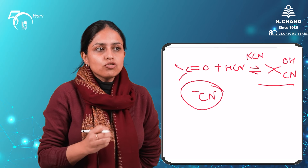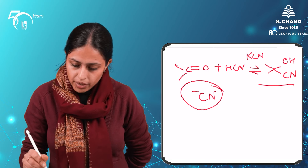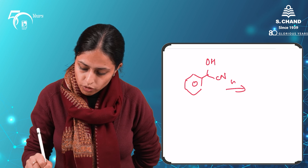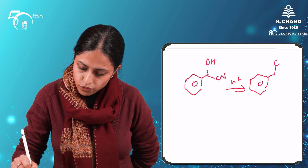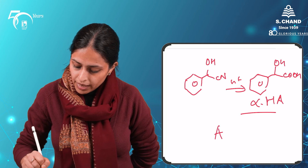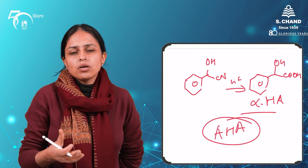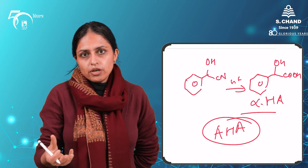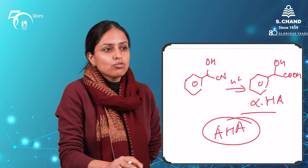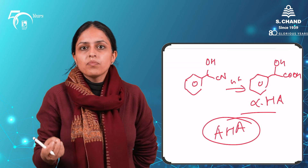Cyanohydrins are commercially important compounds. For example, the cyanohydrin of benzaldehyde, when hydrolyzed, gives an alpha-hydroxy acid. Alpha-hydroxy acids, abbreviated as AHAs, are very important industrial compounds used in anti-aging products; they are components of citrus peels and are among the richest sources of antioxidants. Thus the hydrolysis products of cyanohydrins have significant commercial importance.